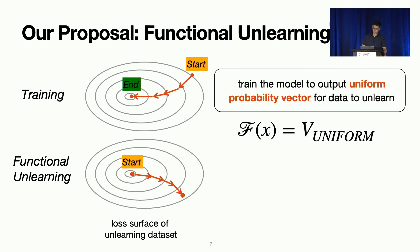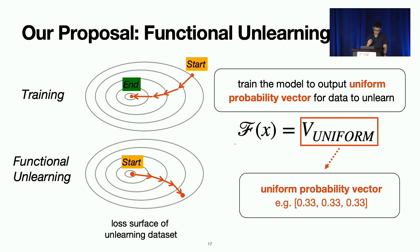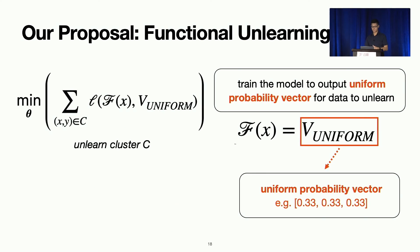So we're going to retrain the original model so that the output is not the correct label for each of these data you want to unlearn, but rather a uniform probability vector. So what is this? It's simply the case where the model is unsure which class or which output class this current data belongs to. So you just simply give equal probability to all classes. So we do this by simply minimizing this loss function to force the original model to output the uniform probability vector for each of the data points you want to unlearn.